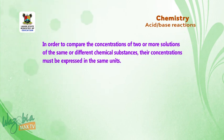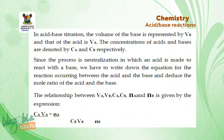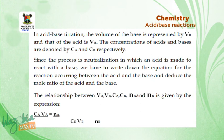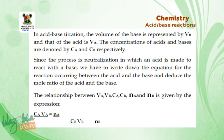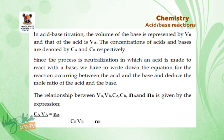Welcome back. In an acid-base titration, the volume of the base is represented by VB and the acid by VA. The concentrations of acid and base are denoted CA and CB respectively. We write the equation for the reaction to deduce the mole ratio of acid to base. The relationship is given by: CA·VA / CB·VB = NA / NB.